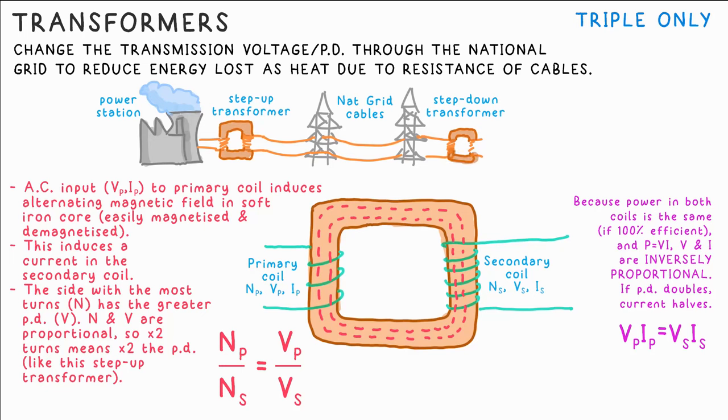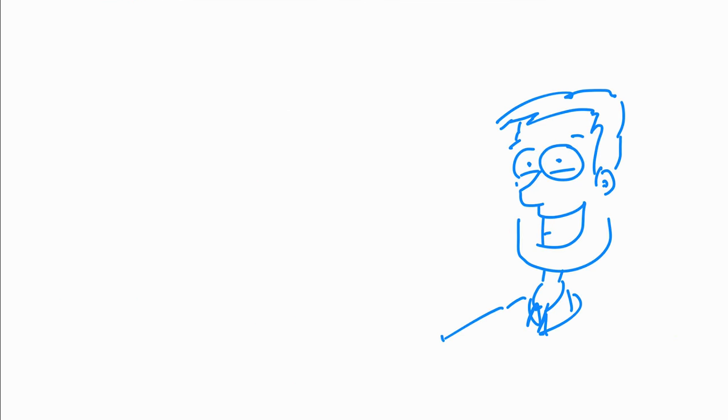A step down transformer at the other end of the cables steps the voltage back down to a safer PD of 230 volts which means it must have fewer turns on the secondary coil. So I hope you found that helpful. Leave a like if you did and pop any questions or comments below. I'll see you in the next video.